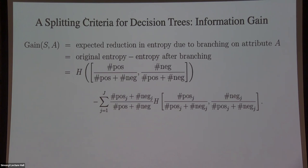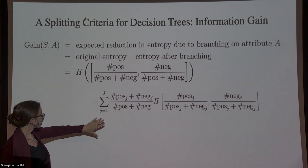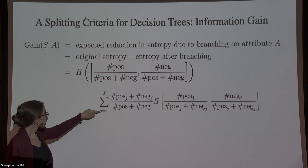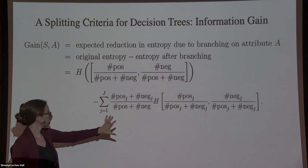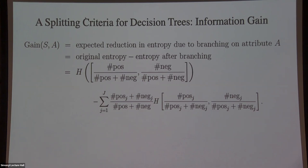The entropy before branching uses all the positives and negatives in S. The entropy after branching is an expectation — the sum over all values j of the fraction of points that went in that direction times the entropy after that split. Let me work out a couple of examples so you can see how this works.